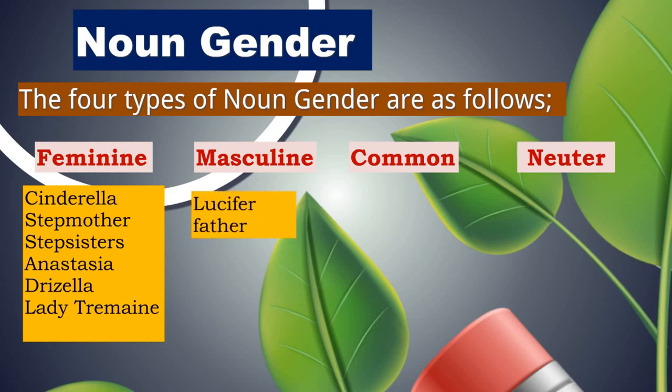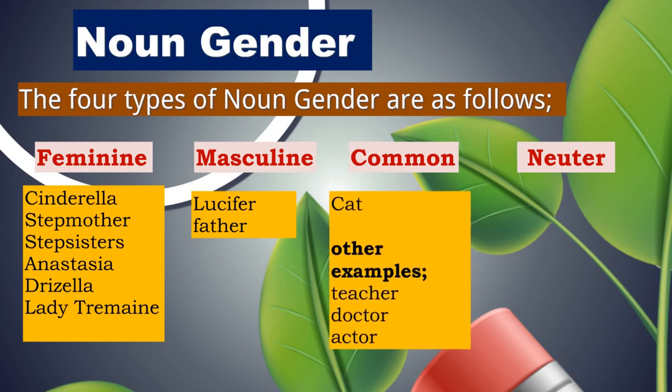Lucifer and father become masculine. Lucifer is the name of a male cat — male cats are tom cats. So masculine gender: Lucifer, father. Common gender: cat is given here as a common gender. Cat can be masculine or feminine. The other examples are teacher — it can be given to a lady teacher or a master. Similarly, doctor, actor — these are all common genders.